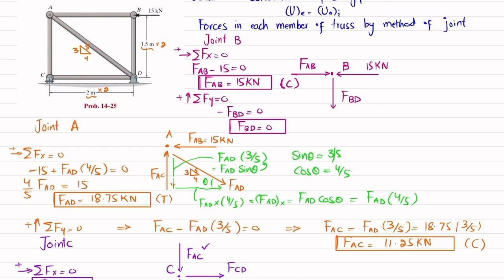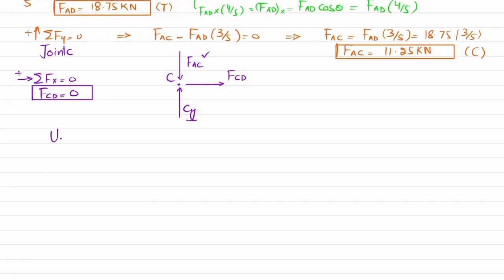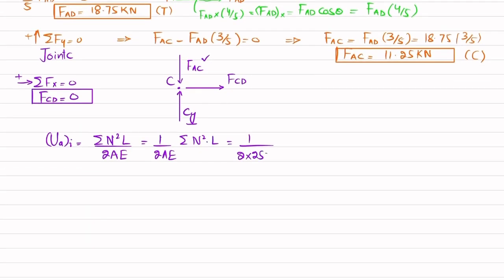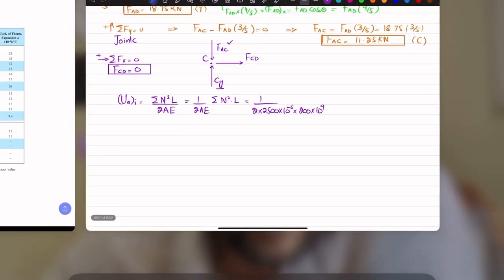Now we calculate the strain energy due to axial loading using: U = Σ(N²L)/(2AE). Taking 1/(2AE) outside, we are left with Σ(N²L) for the five members. The area A = 2500 × 10⁻⁶ m², and E = 200 GPa = 200 × 10⁹ Pa for A992 steel (from the property table).